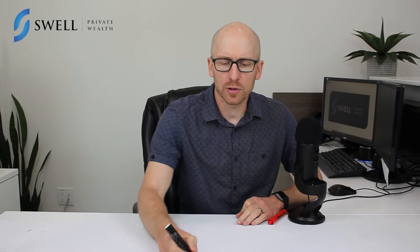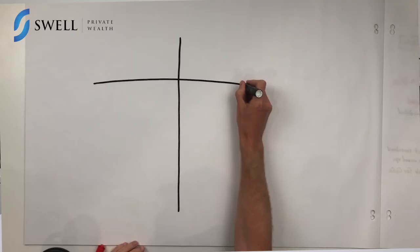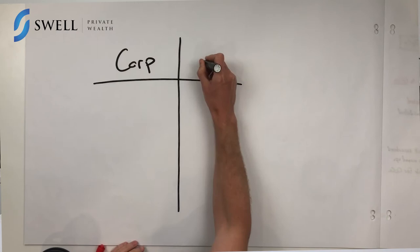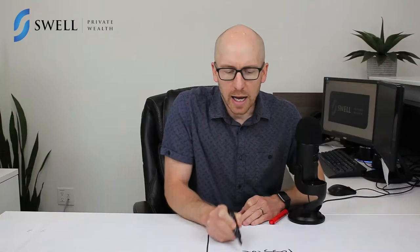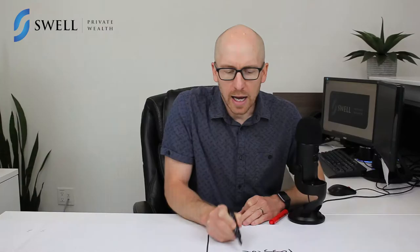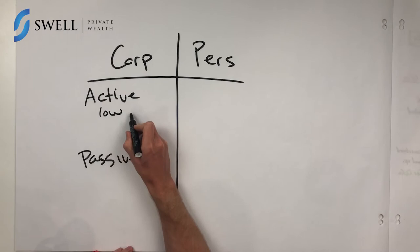So first off, let's talk about the two worlds of tax. There's your corporate world and the personal world. On the corporate world, there's two main types of income: active income and passive income. Active income has a low rate of tax when you earn $500,000 or less, or a high rate of tax when you earn $500,000 plus.